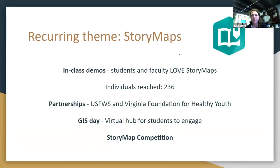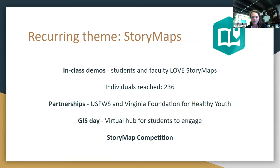A big theme of our fellowship was story maps. Story maps are the best thing that happened in virtual learning — everyone loves story maps. Between Olivia and I, we reached 236 individuals with story maps across a wide variety of classes: English, science, sociology, and more, using story maps as a way to creatively share information in a virtual education setting. We also developed partnerships, making story maps for the U.S. Fish and Wildlife Service and the Virginia Foundation for Healthy Youth.